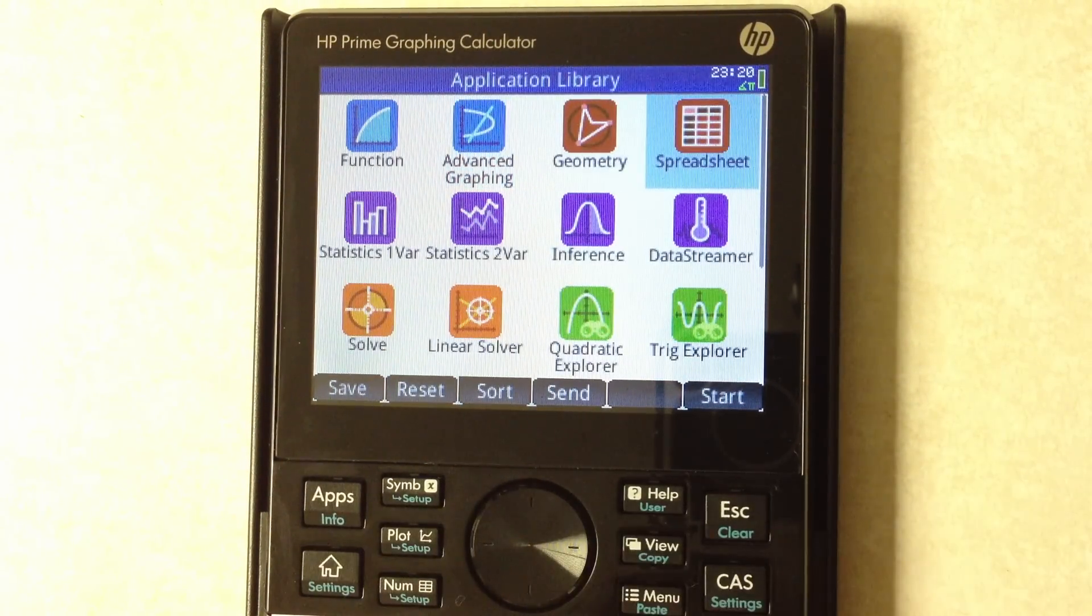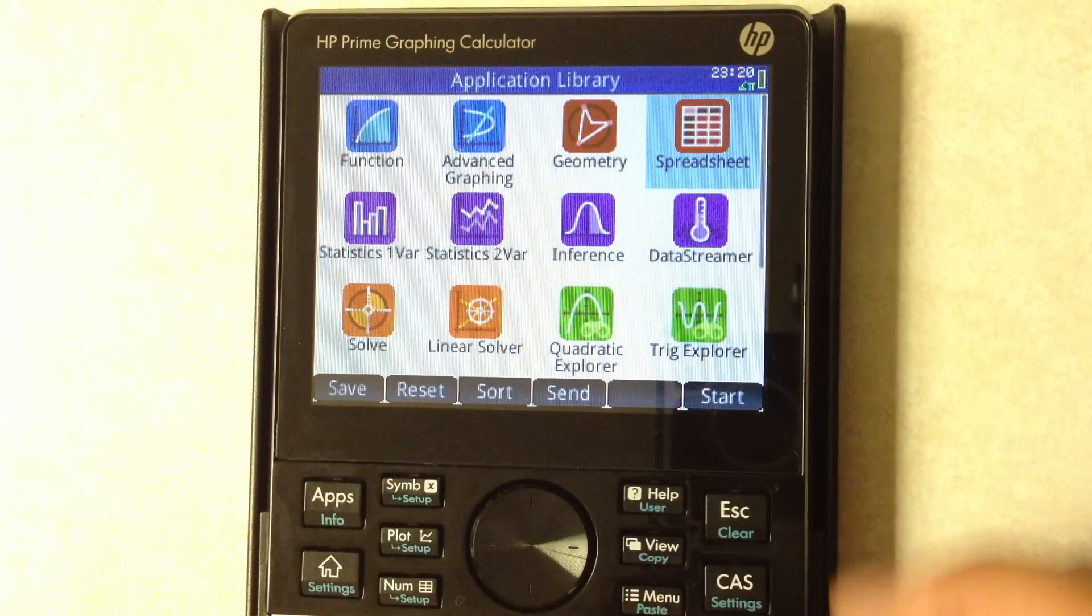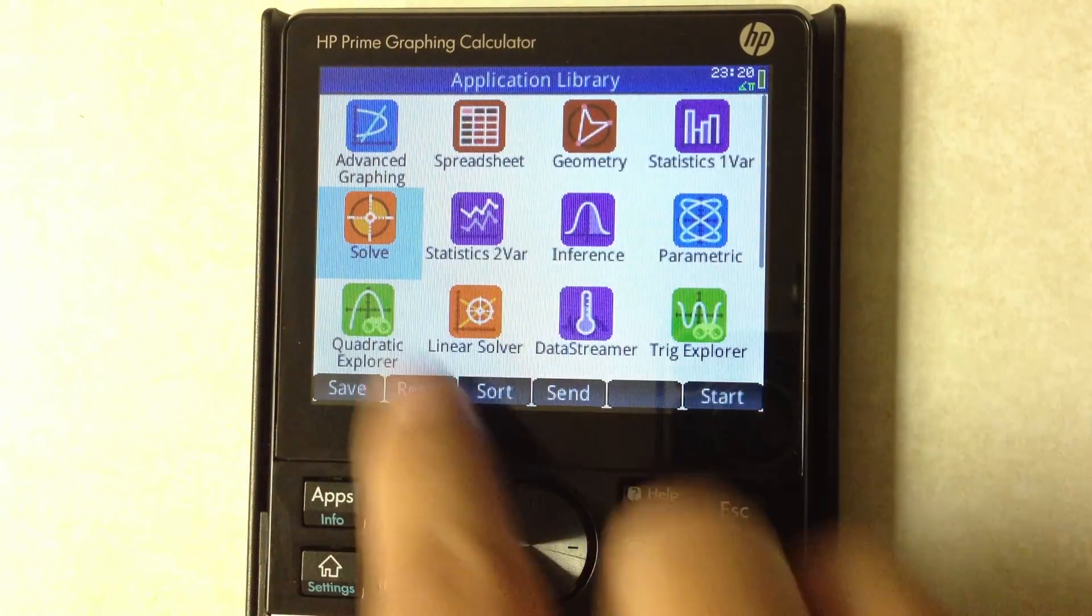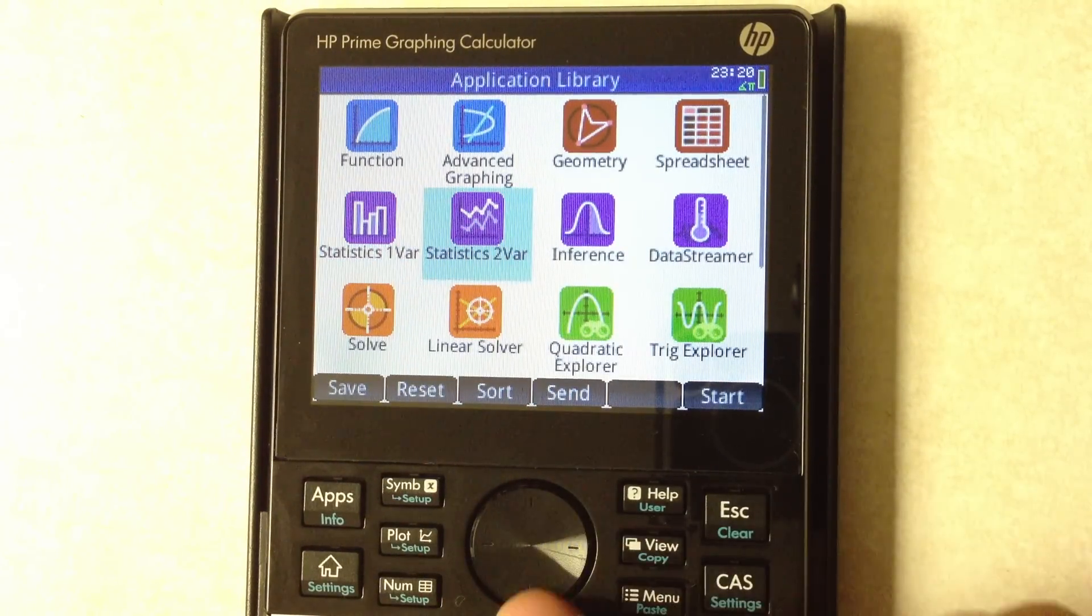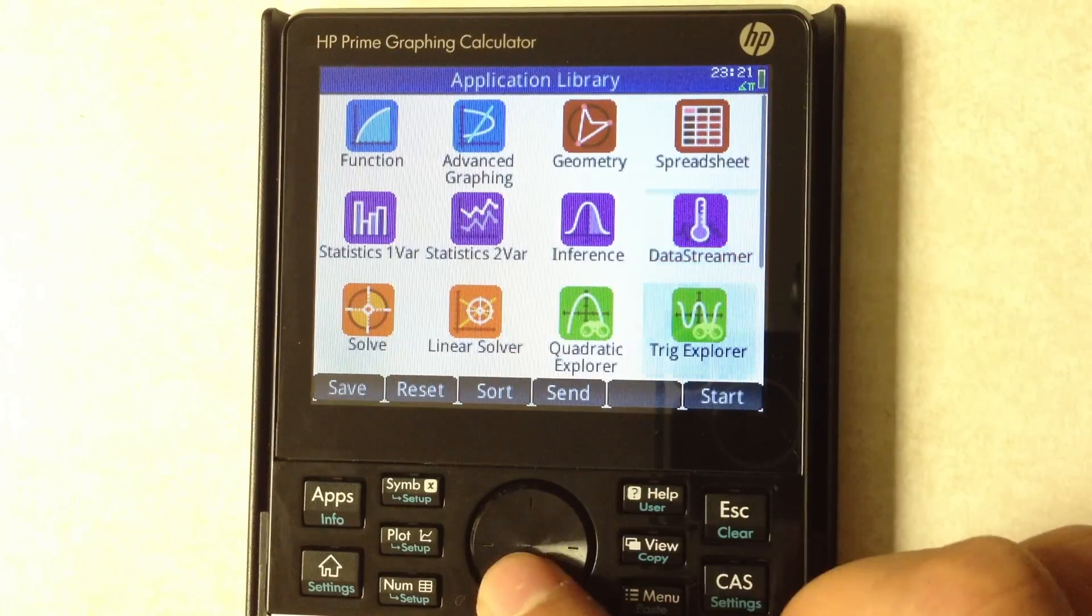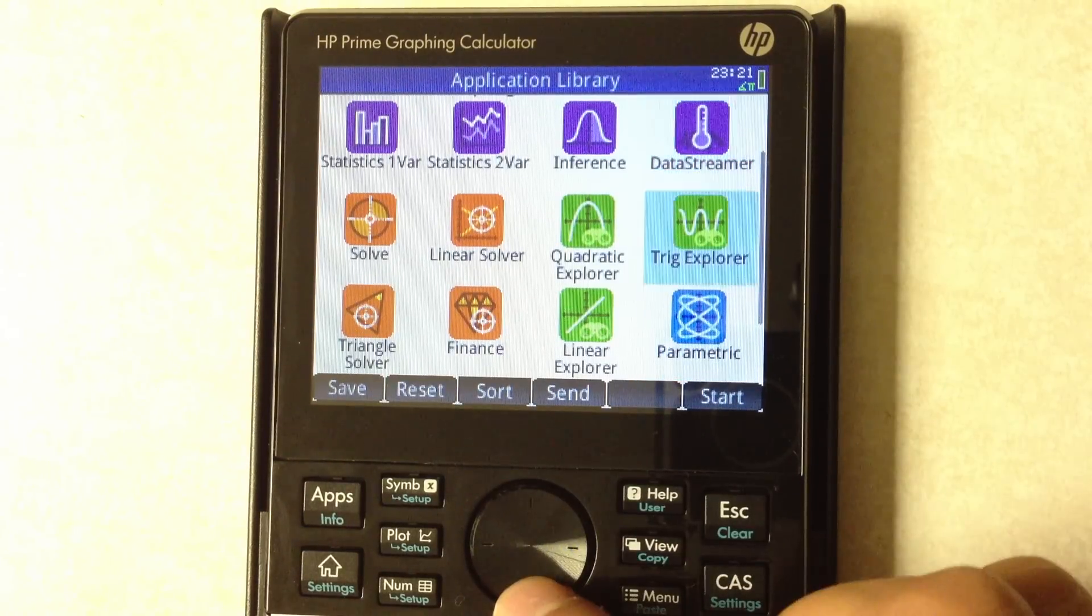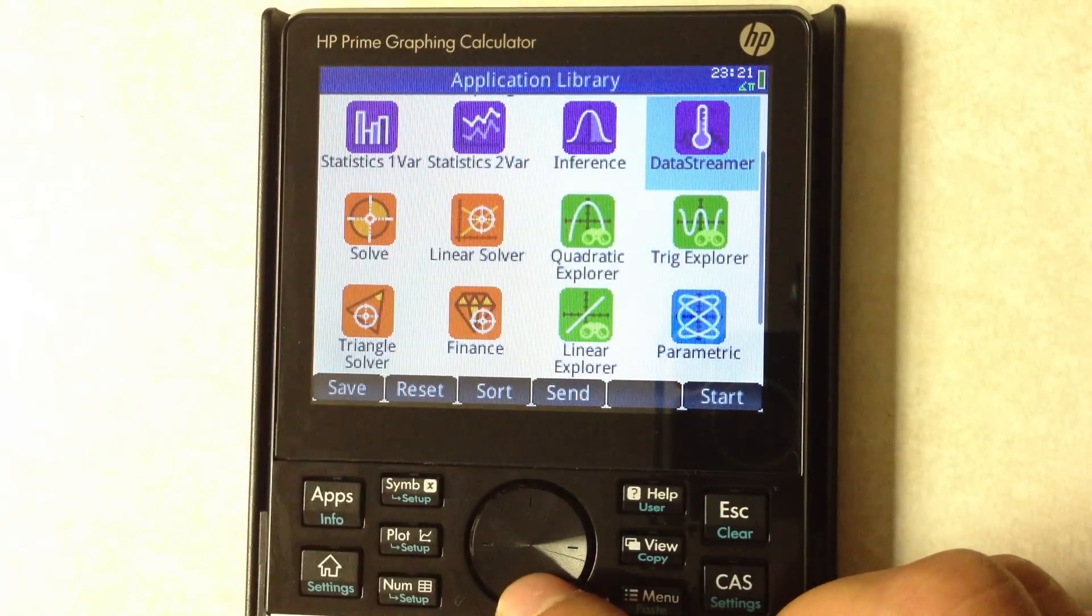It's got a built-in spreadsheet which works very much like Excel. I'm not really going to spend too much time on that. Stats - it's got one and two variable statistics. It's got a built-in solver, data collection if you have any sort of experiments that you're running where you're collecting data. That I think requires an add-on that connects up to the USB port up here.